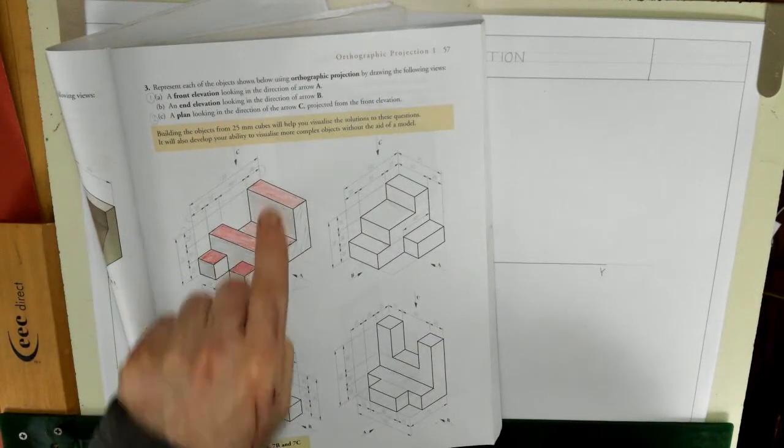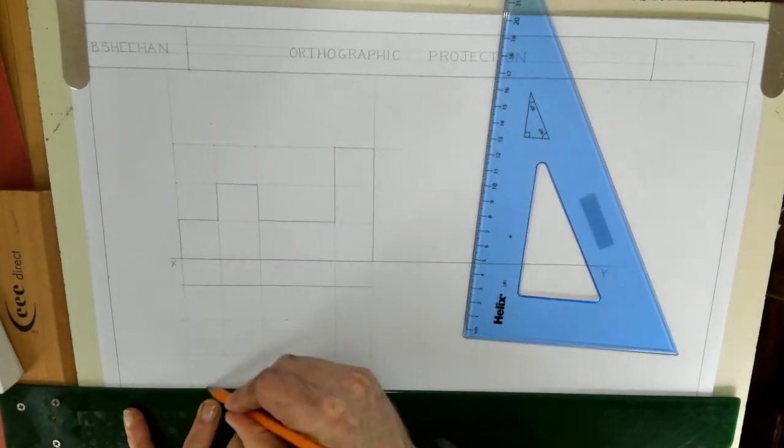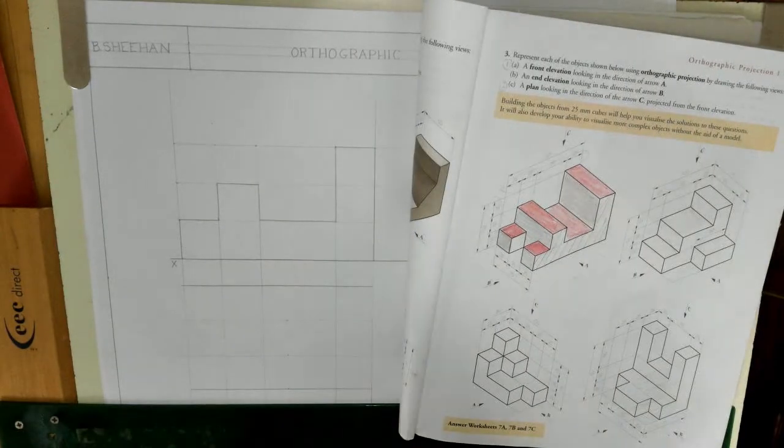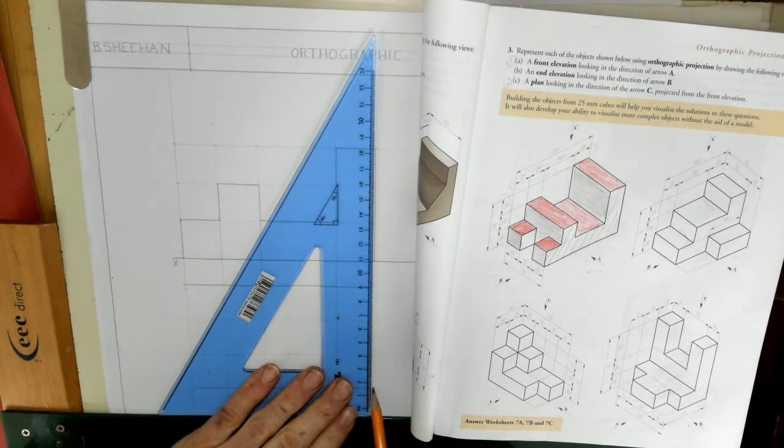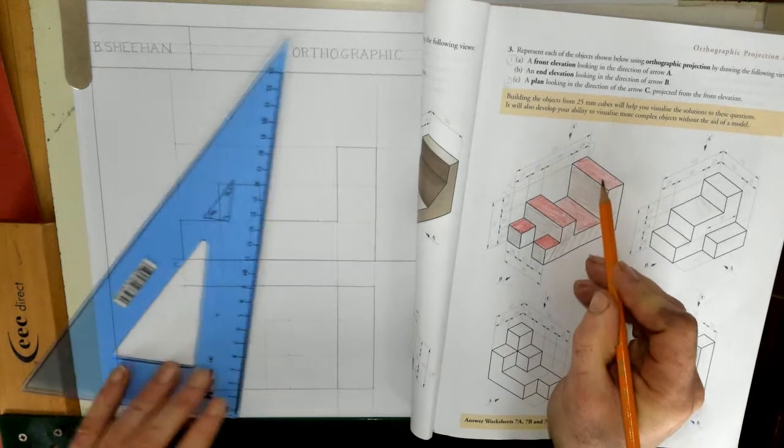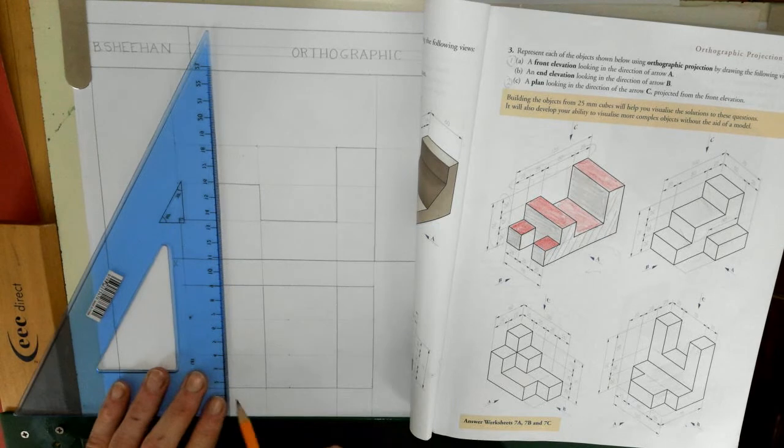For the plan, I'm going to see the red shapes looking down on top of it. So I'm going to look at my drawing here. So the red shape on this - this bit here, and this. That's that. This bit in here, and this line here.